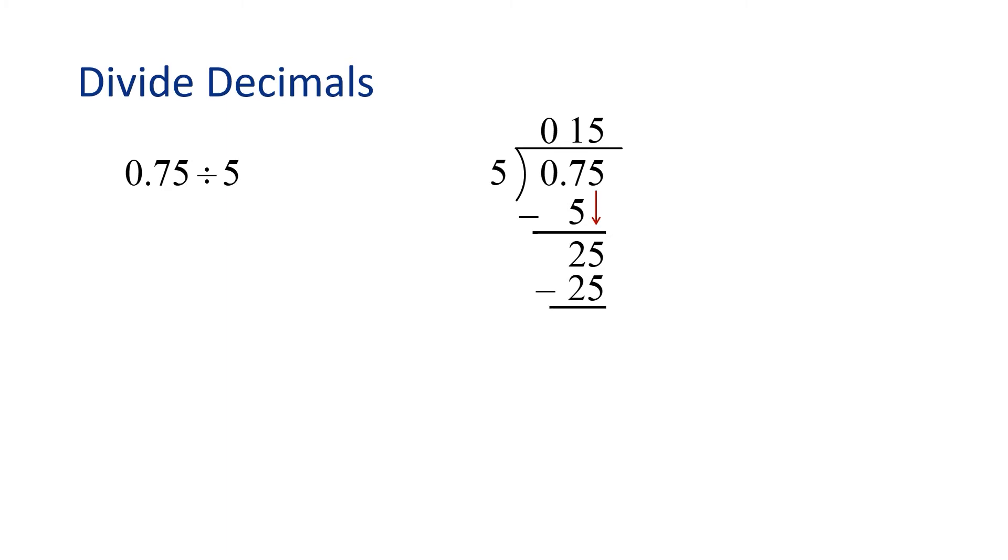Now we draw our line and subtract. 25 minus 25 is 0. Meaning we have a remainder of 0.